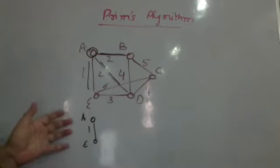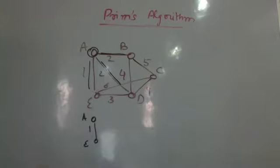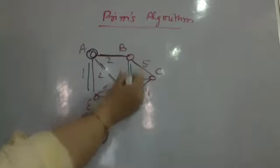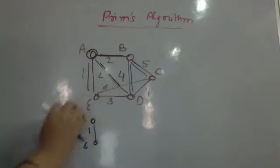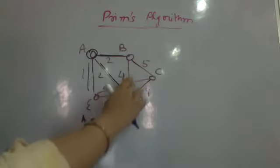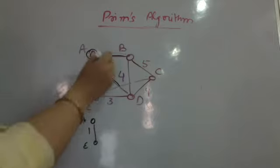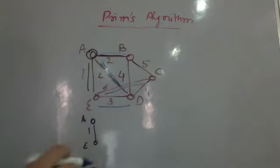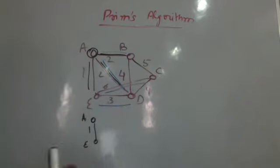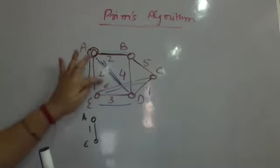Now I check all the edges adjacent to the current tree. After picking A to E, the adjacent edges are: A to B, A to D, E to D, and E to C. So there are four possible edges — two coming out from A and two coming out from E — having weights 2, 2, 6, and 3.